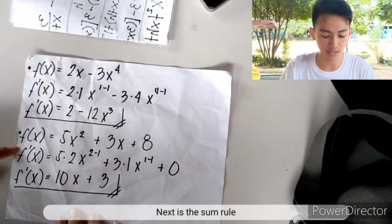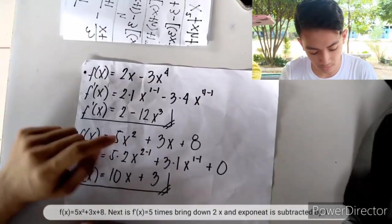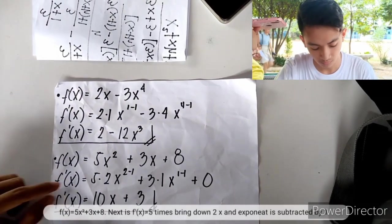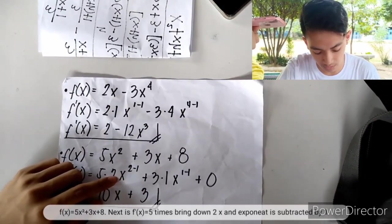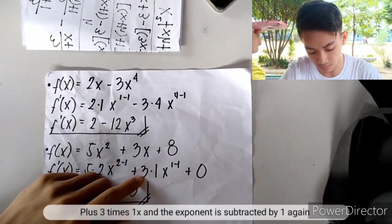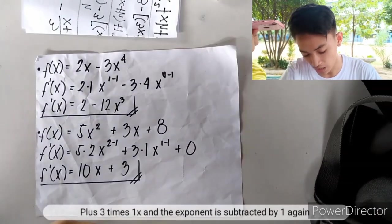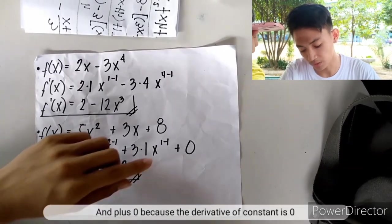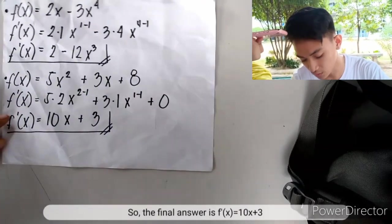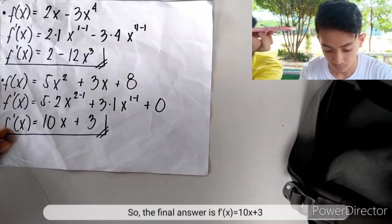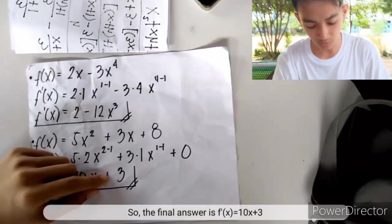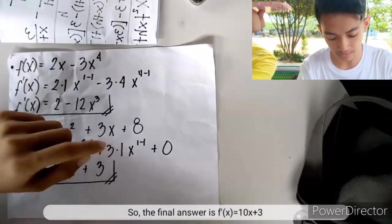Next is the sum rule example. f(x) equals 5x squared plus 3x plus 8. f prime(x) equals 5 times 2x, the exponent subtracted by 1, plus 3 times 1, x, the exponent subtracted by 1, plus 0 because the derivative of a constant is 0. So the final answer is f prime(x) equals 10x plus 3.